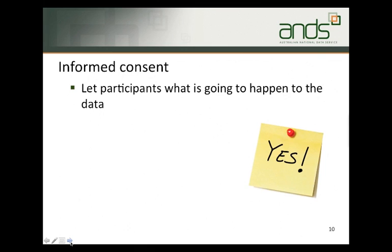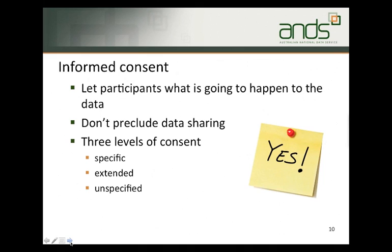If the researcher hopes to be able to share the data at a later time, the consent form should be designed to set out precisely what will be done with the data, how it will be stored and made available, and how confidentiality will be maintained. While consent can in most cases be obtained retrospectively, this is time consuming and impractical. At a minimum, consent forms should not preclude data sharing, such as by promising to destroy data unnecessarily. The national statement defines three levels of consent for future use of data: the first level, 'specific', is limited to the specific project under consideration. The second, 'extended', is given for use of data in future research projects that are either an extension of or closely related to the original project, or in the same general area of research. The third level, 'unspecified', is given for the use of data in any future research.